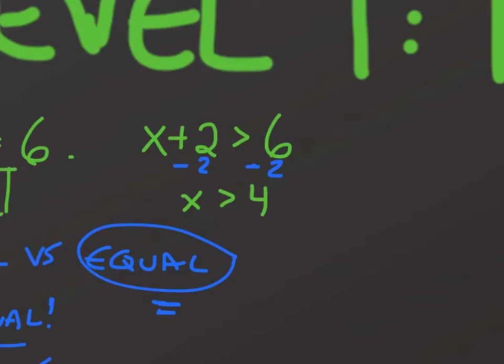And you'd be left with x is greater than 4. You'll notice the only difference here is instead of this being equal sign, I've replaced it with a different symbol. Since our answer is x is greater than 4, that means this inequality will be true for any number that's greater than 4.